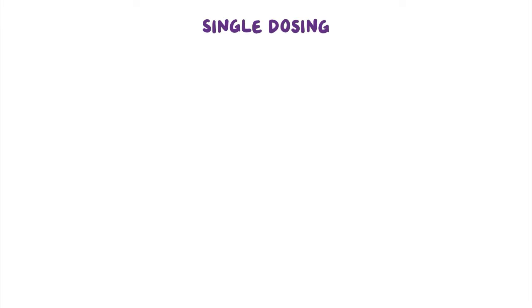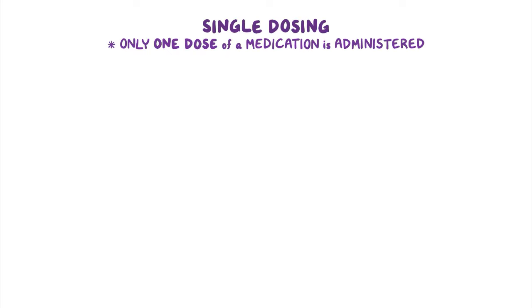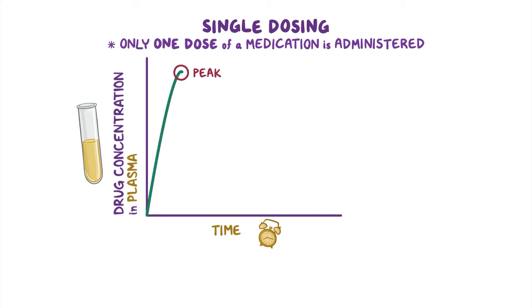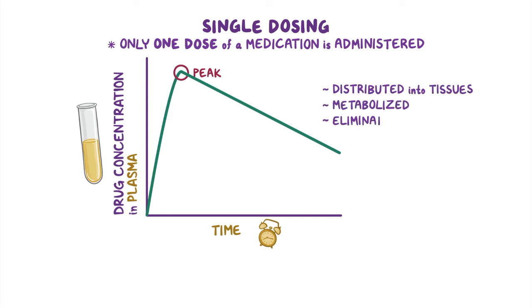There are three main types of dosing regimens. First, there's single dosing, meaning that only one dose of a medication is administered. Plotting this on a graph with drug concentration in plasma on the y-axis and time on the x-axis, the plasma concentration rises steadily as it gets absorbed into the circulation until it reaches a peak. Then the concentration drops again as the medication is distributed into tissues, gets metabolized, and is eliminated.